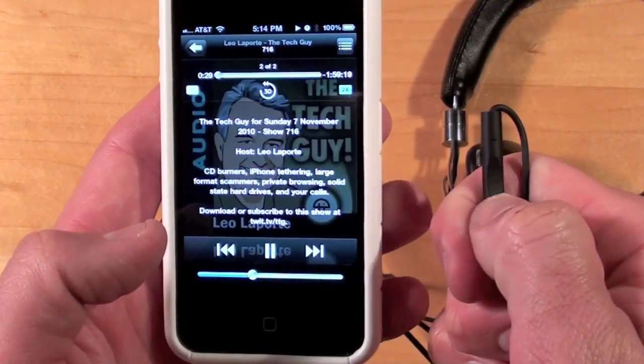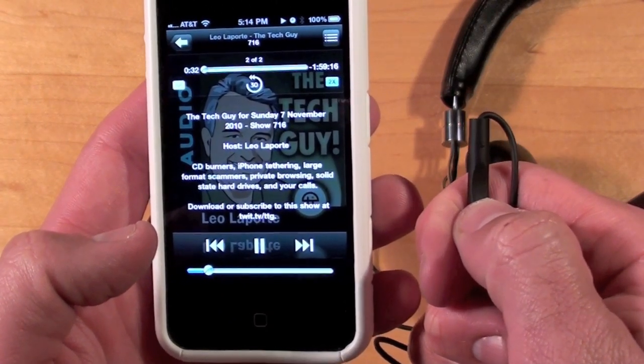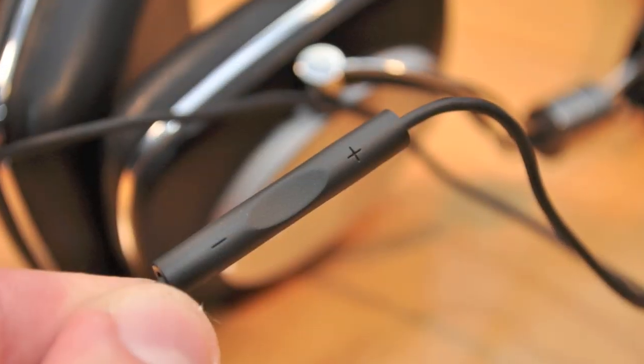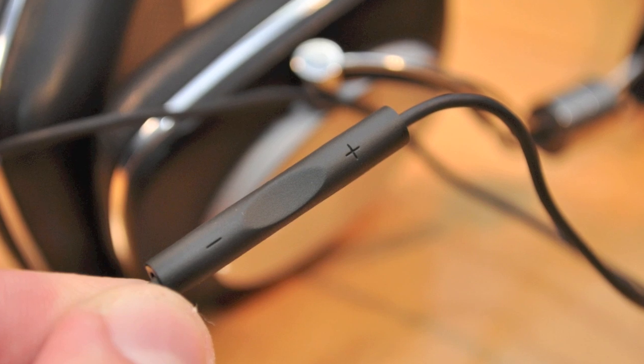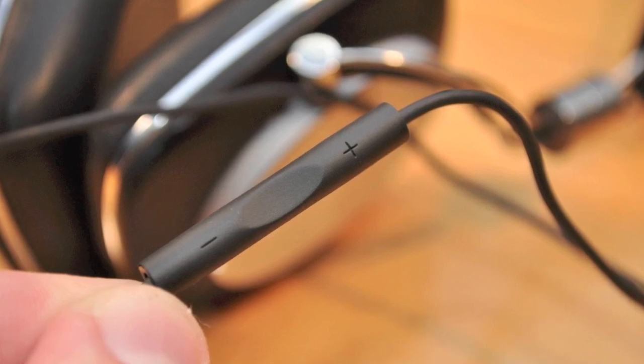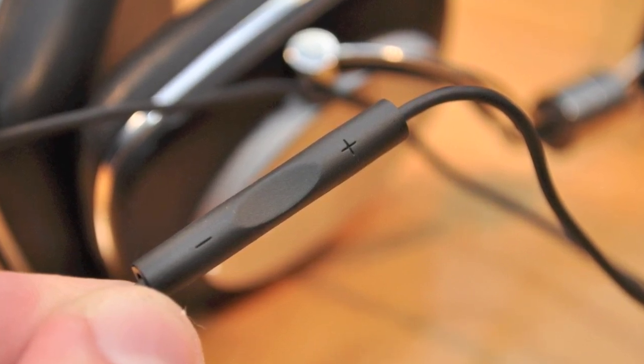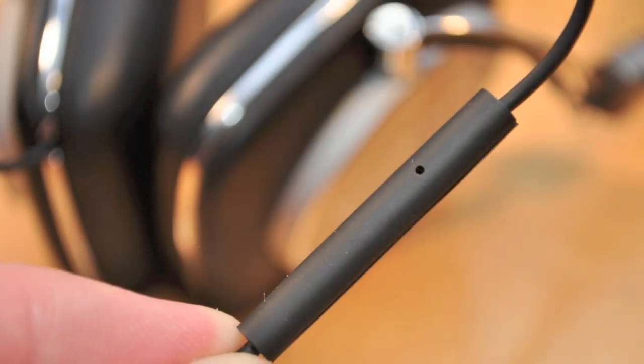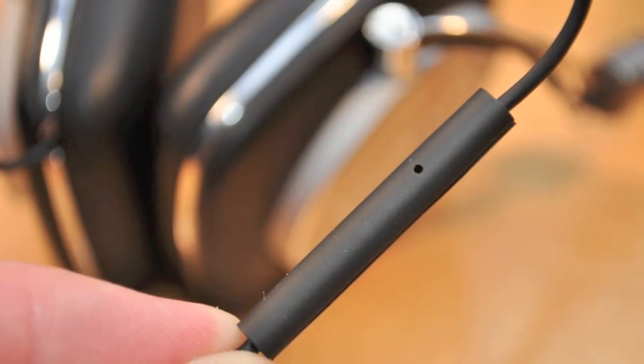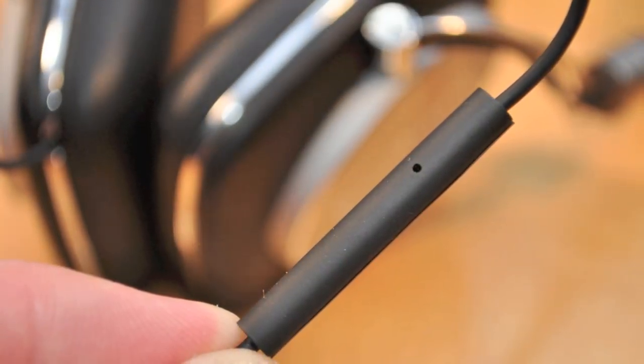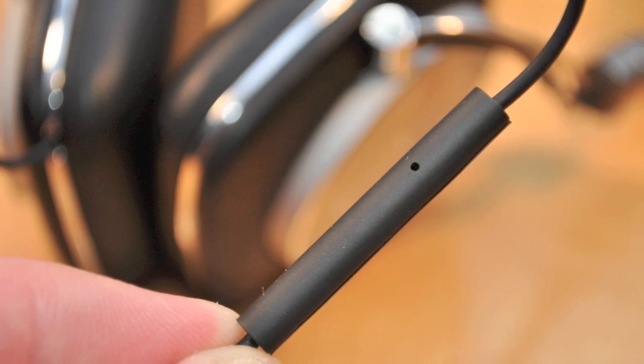The remote control is very similar in design to the Apple earbuds. So you have the volume up and down keys along with the center button which serves a variety of functions from pause to fast forward to reverse. The remote also has a built-in microphone which is being used to record this audio. Of course it can be used for making calls and voice recording.